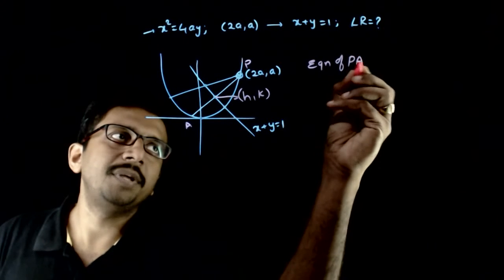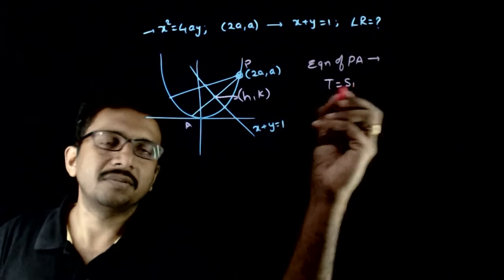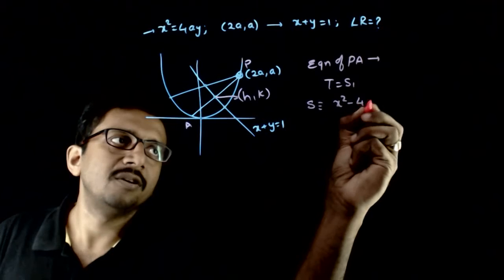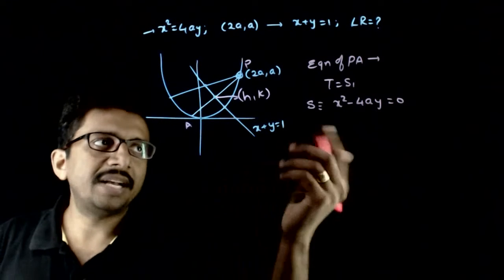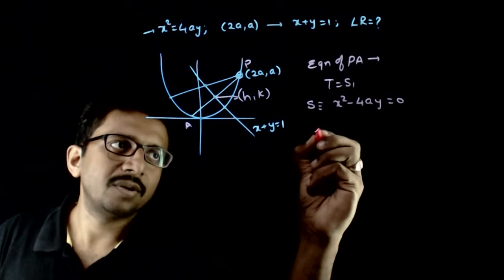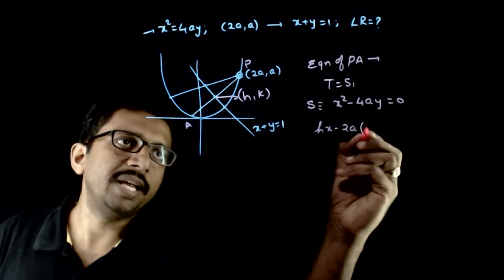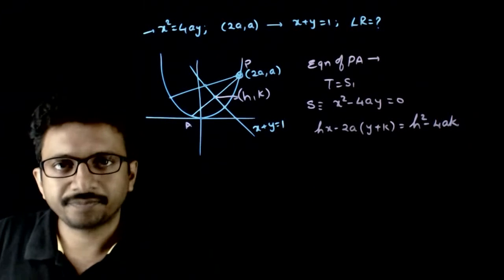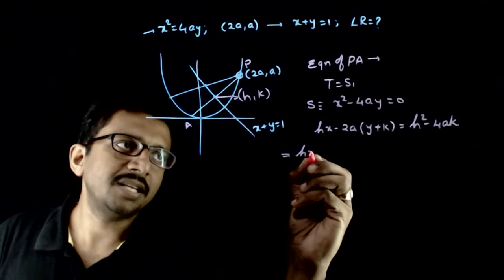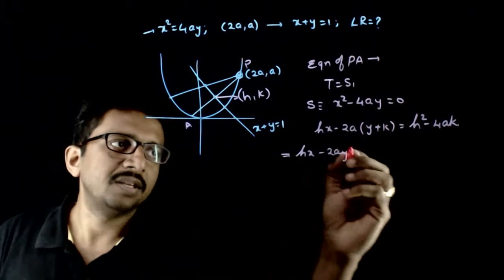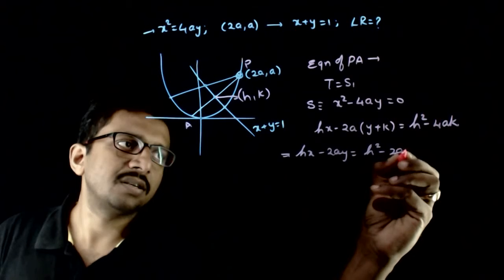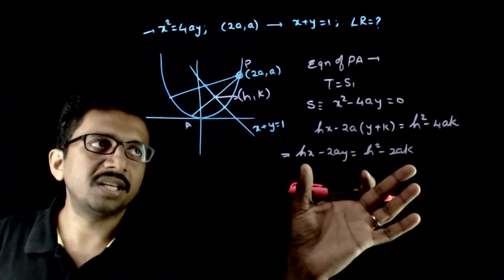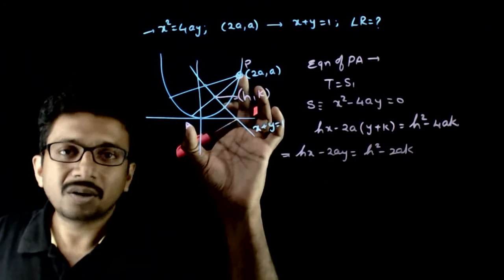The equation of chord PA for the parabola x² - 4ay = 0, writing T = S1, gives us: hx - 2ay = ak, which implies hx - 2ay = h² - 2ak. This is the equation of chord PA using the T = S1 formula.